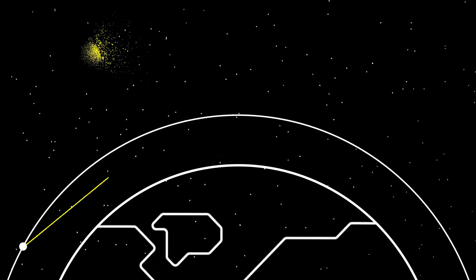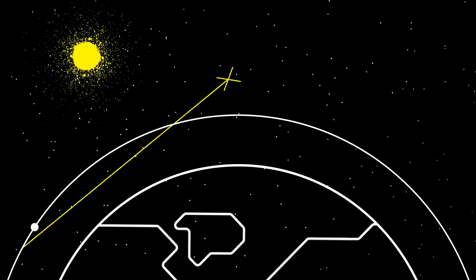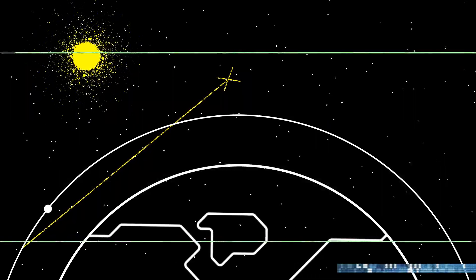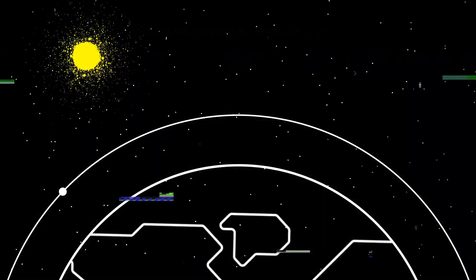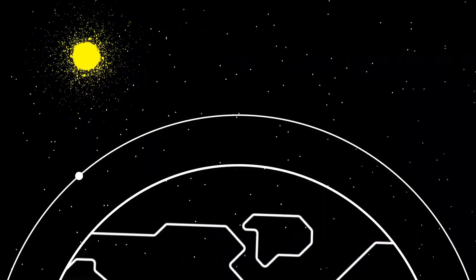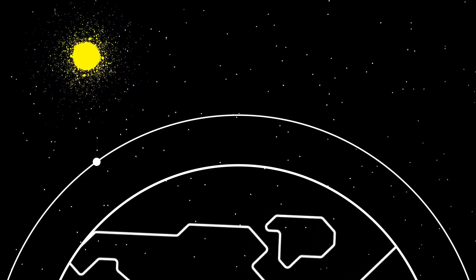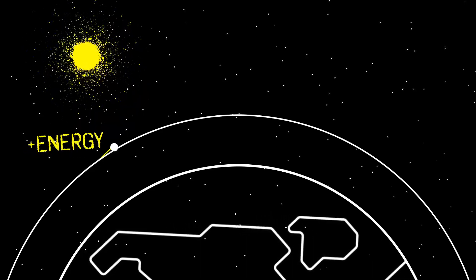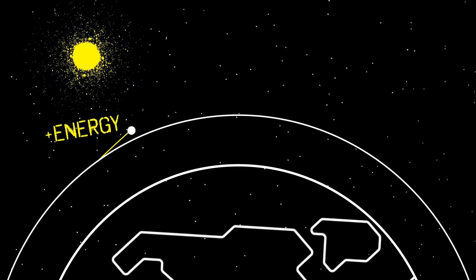In orbital motion, we don't actually point to where we want to go and start moving there. Satellites are already moving at a tremendous speed, around 17,000 miles per hour in low Earth orbit.